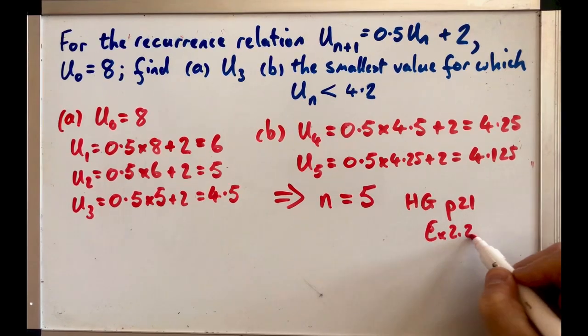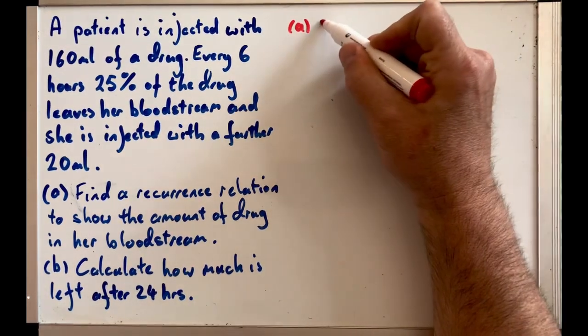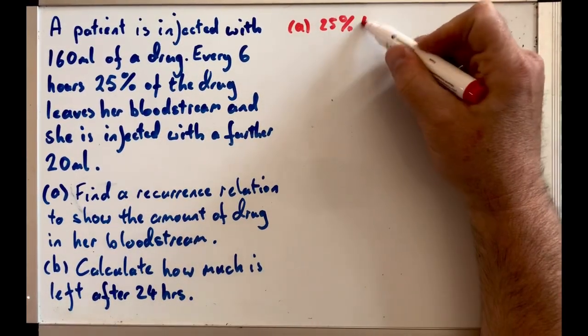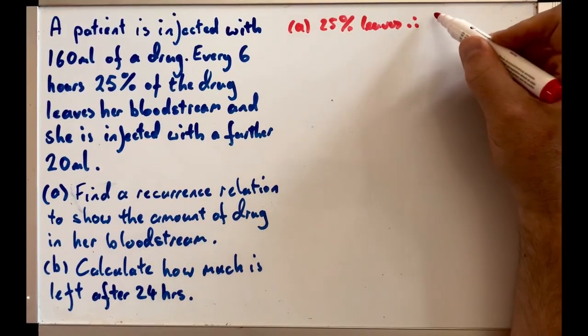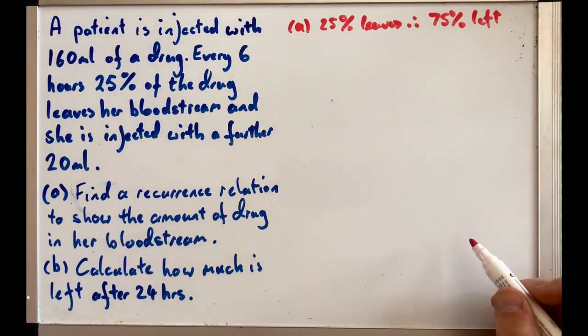Let's have a look at an example set in context here. It says a patient is injected with 160 milliliters of a drug every 6 hours. 25% of the drug leaves her bloodstream and she's injected with a further 20 milliliters. The first thing is asking us to find a recurrence relationship to show the amount of drug in her bloodstream at any given time. Well, for A we know 25% leaves, therefore there must be 75% left.